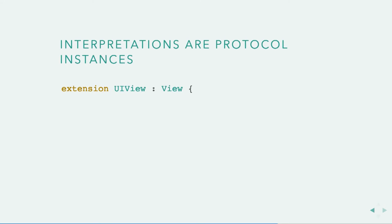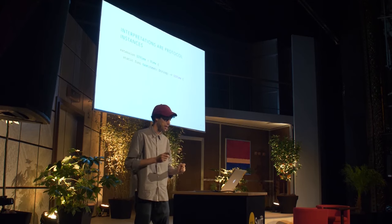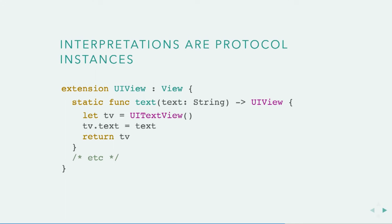This describes the view, but it doesn't give meaning to it. We have to provide concrete instances that can render. To do so, we conform to the protocol — we say UIView is a View. The compiler says you better implement all the methods: implement the method to make a text view, and because Self gets swapped with the concrete type, we return a UIView. We make a UITextView, do the same for image view, stack view, et cetera. The compiler will enforce that we handle every single method, so it's still safe.